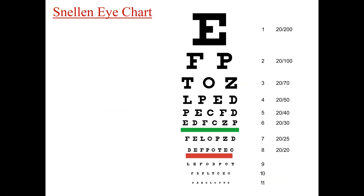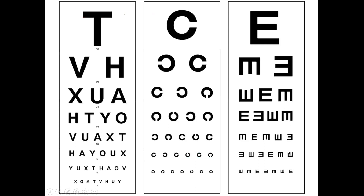As we go down the chart, the number of letters increases and the size decreases. The smallest line the person can see represents their visual acuity. Line 8 represents normal visual acuity, which is 20/20 or 6/6.